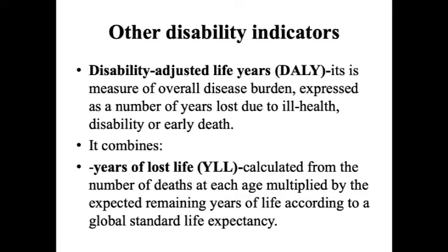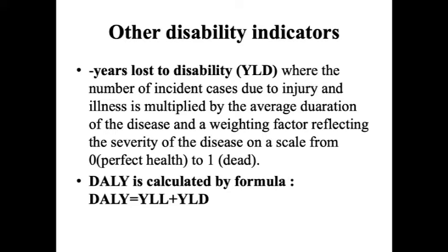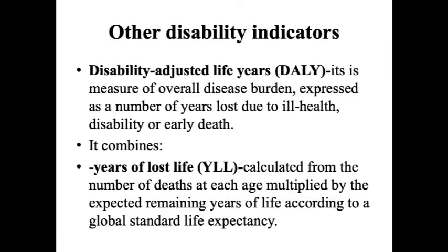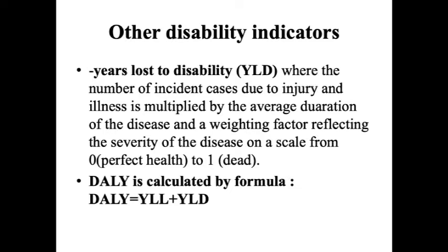Disability Adjusted Life Years (DALY) is a measure of overall disease burden expressed as the number of years lost due to ill health, disability, or early death. It combines Years of Life Lost (YLL) — calculated from the number of deaths at each age multiplied by the expected remaining years of life — and Years Lived with Disability (YLD), where incident cases are multiplied by the average duration of disease and a severity weighting factor from zero (perfect health) to one (dead). The formula is: DALY = YLL + YLD.